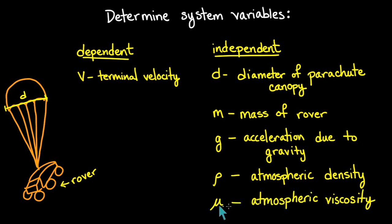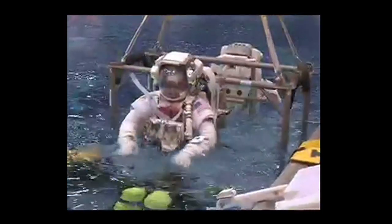For this problem, we can assume that the dependence of the terminal velocity on atmospheric viscosity is negligible, because the atmosphere on Mars, like the atmosphere on Earth, is not very viscous. If we wanted to derive a functional relationship that would work, for example, underwater, it would be important that we include viscosity as an independent variable.